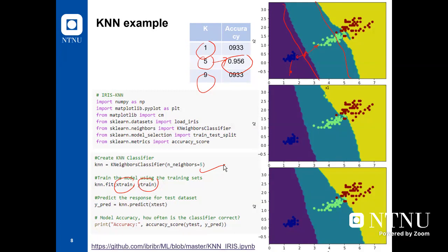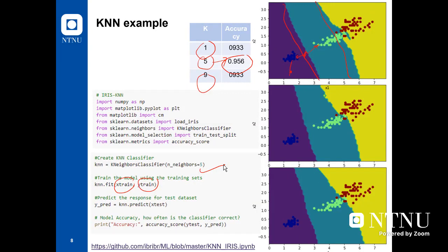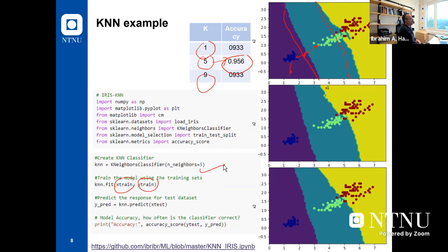Question: why would you ever use KNN over ANN? These algorithms were developed maybe before artificial neural networks. When KNN was invented it may have been more efficient, maybe 20 years ago. But today there is no real need to use KNN — it's just an example of supervised learning algorithms. Artificial neural networks are supervised, and there are many other supervised algorithms similar to KNN.